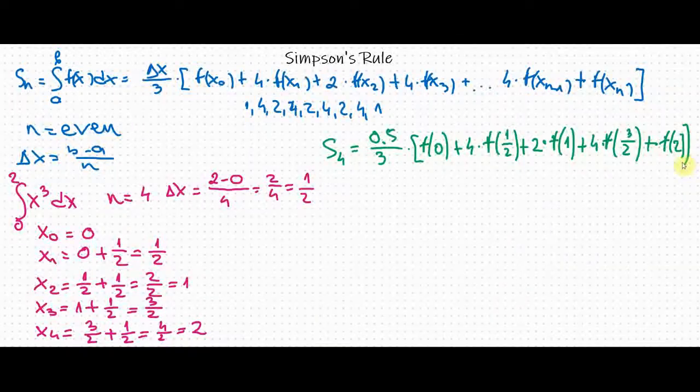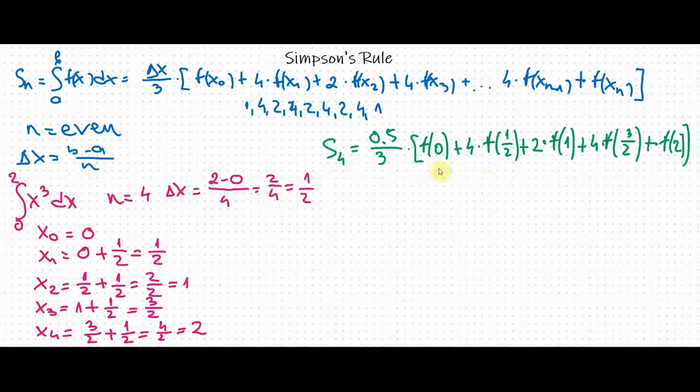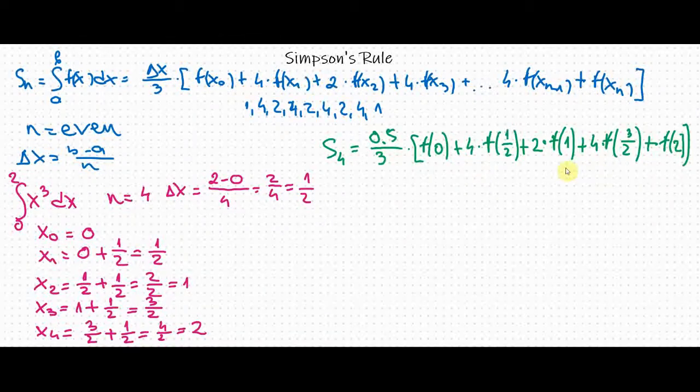Remember that we do not multiply the first and the last term by any number. We have started with nothing, we have ended with nothing. We started here with 4, we have ended here with 4.